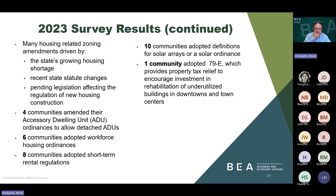Four communities amended their ADU ordinances in 2023 to allow detached ADUs. Six new communities adopted workforce housing ordinances for the first time. Eight communities adopted short-term rental regulations. Ten new communities adopted definitions or regulations for solar arrays in 2023. And one additional community adopted RSA 79E, which provides tax relief to encourage investment and rehabilitation of underutilized buildings in downtowns and town centers.